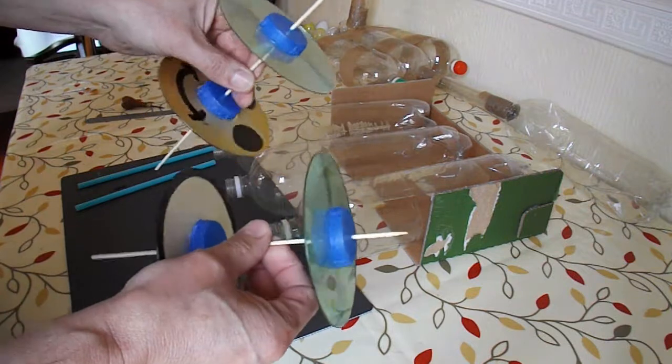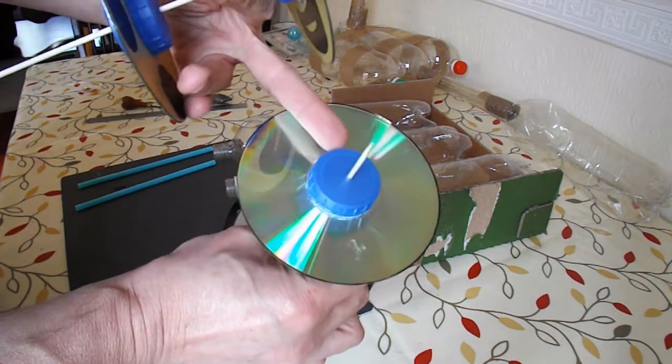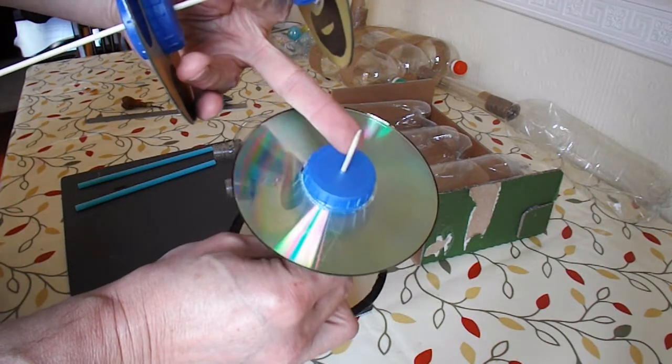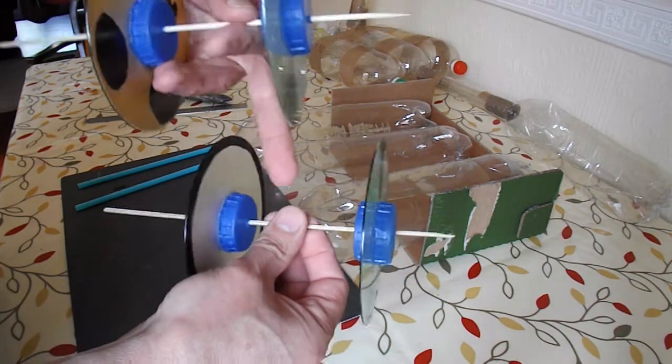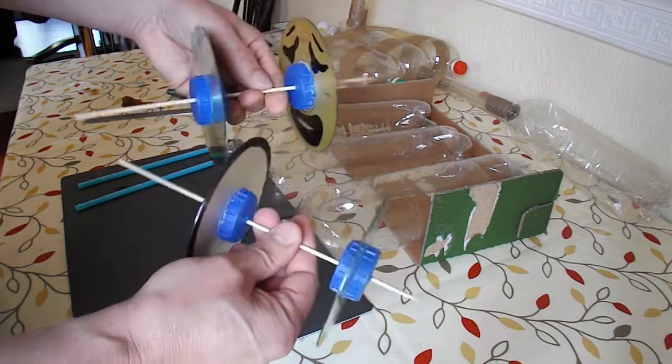I'm going to use some of my CDs that I've already made into wheels by sticking milk bottle tops in the middle, and they're on barbecue skewers for the axles. That will save me a bit of time.